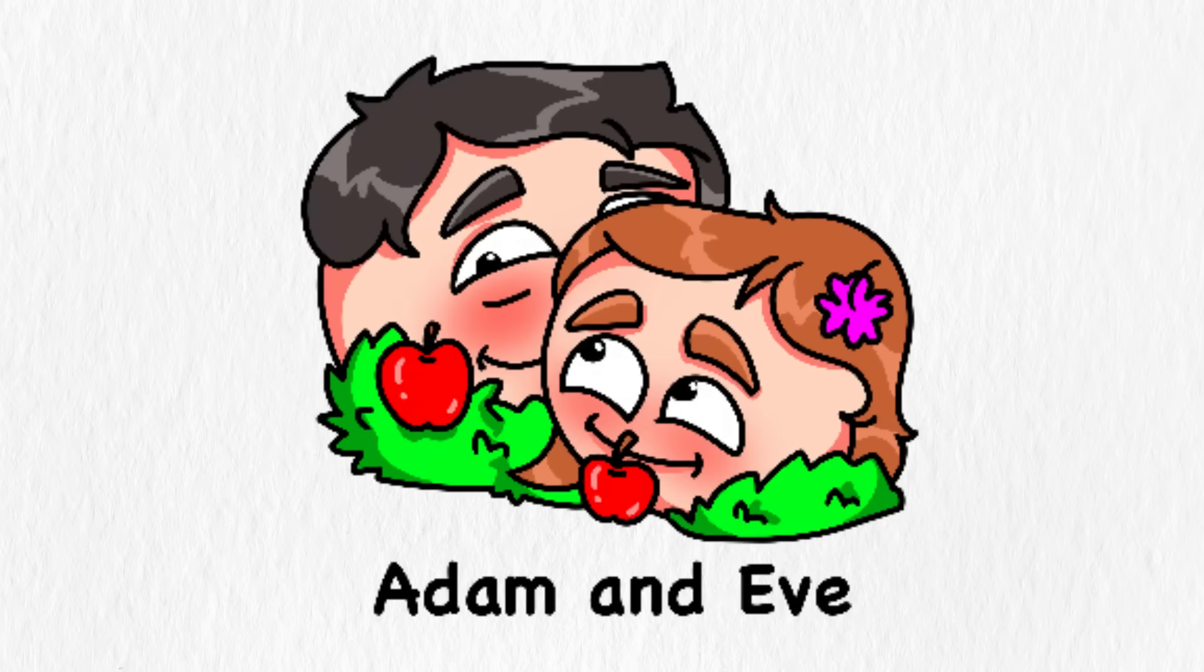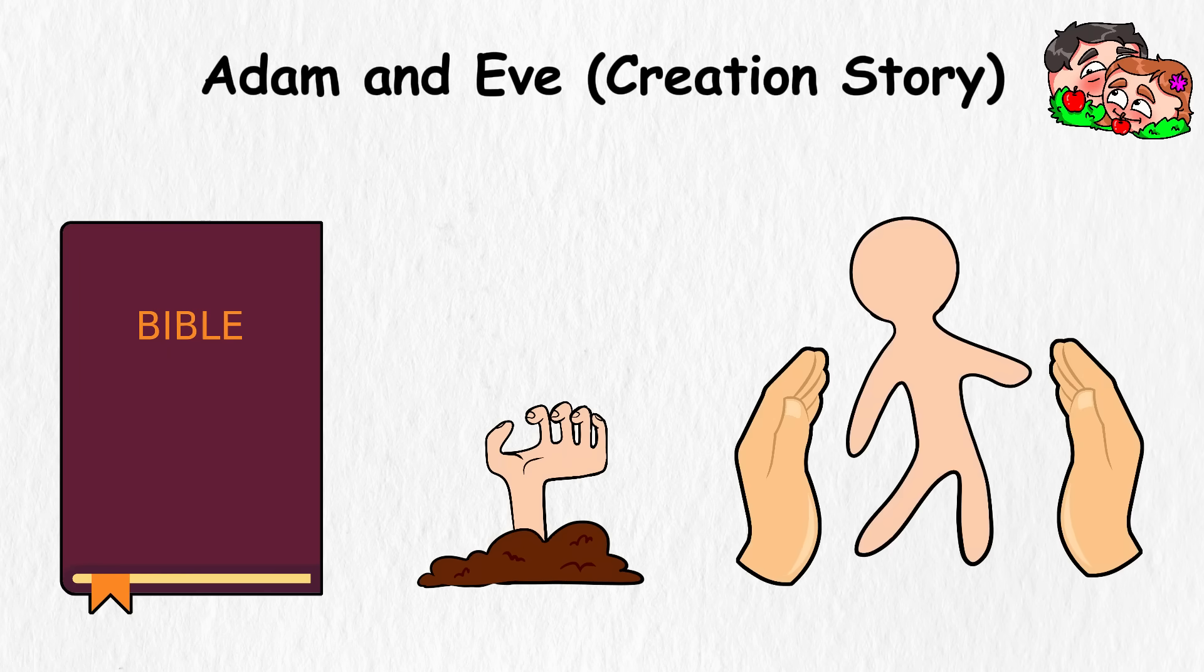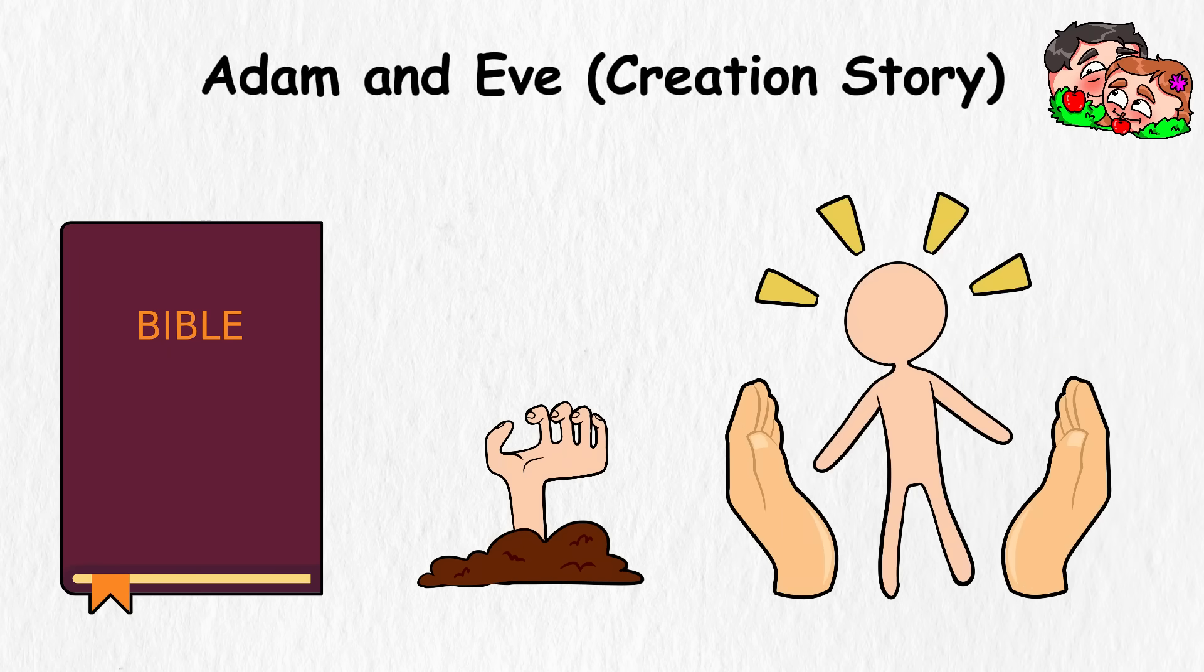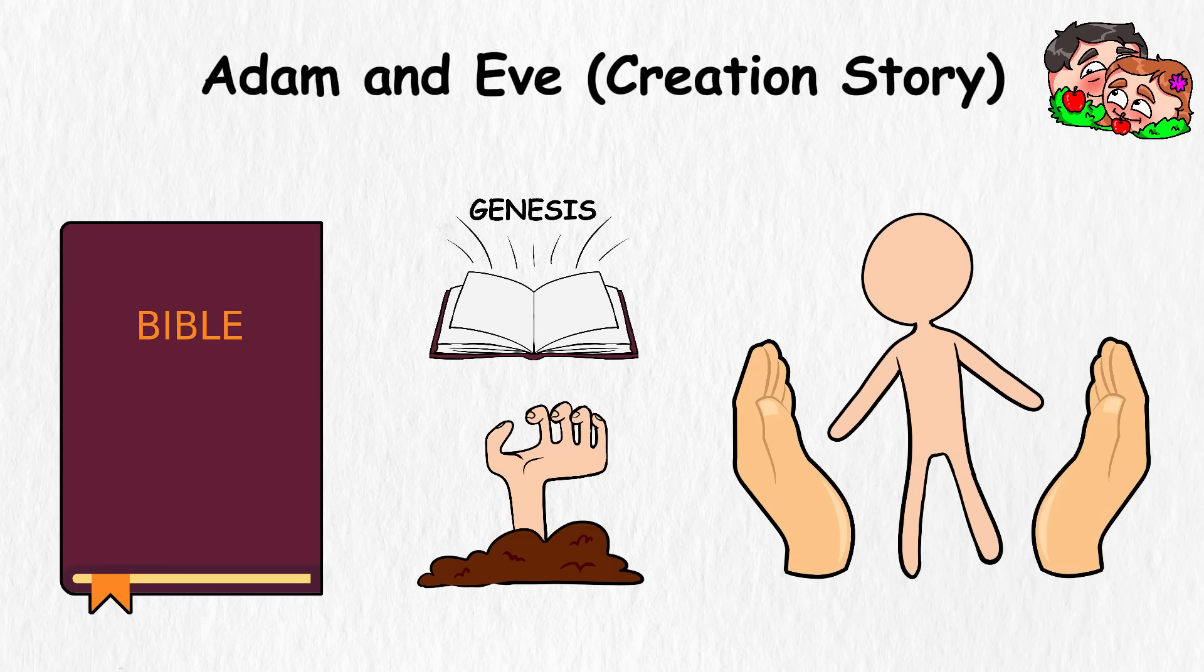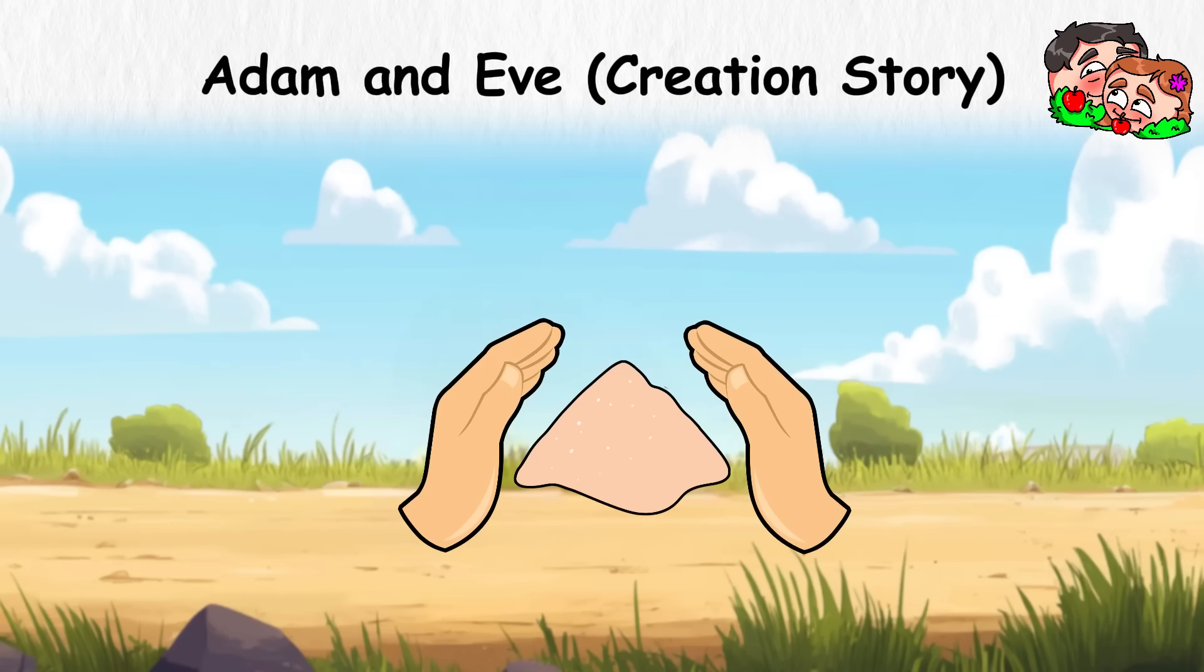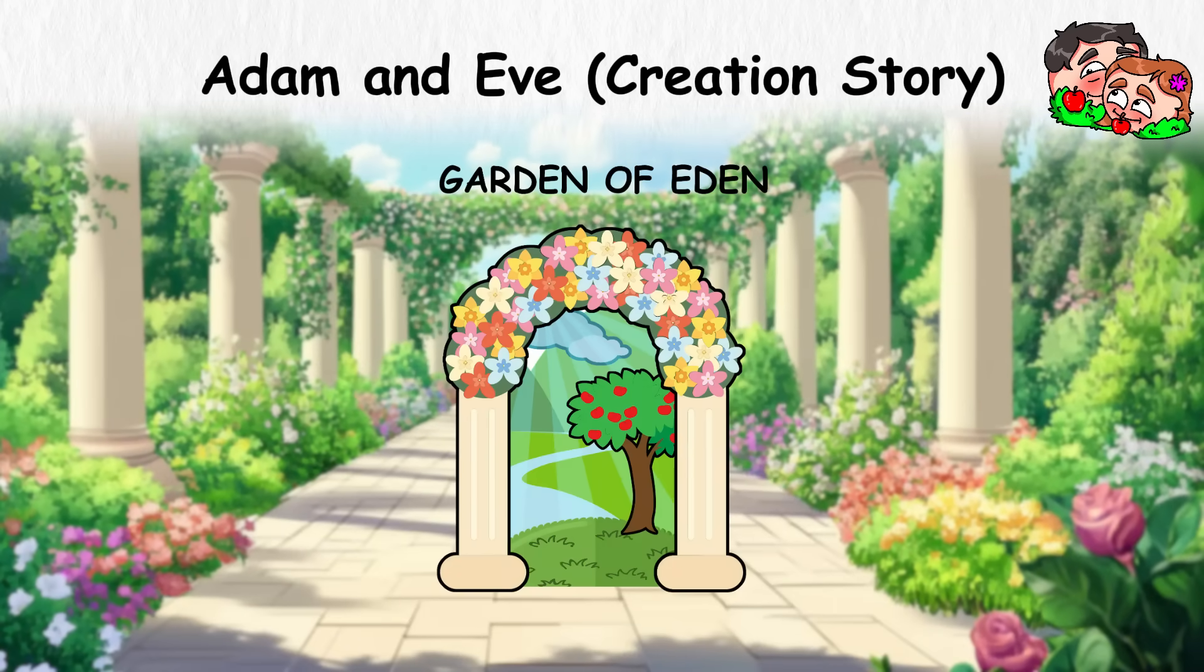Adam and Eve, Creation Story. According to one of the oldest stories on Earth, humans didn't crawl out of the mud by accident. Instead, they were handcrafted, like the world's first limited edition action figures. In the book of Genesis, God forms the first man, Adam, from the dust on the ground. He shapes him, breathes life into him, and places him in a perfect garden called Eden.